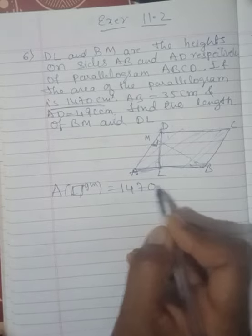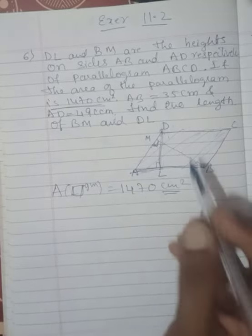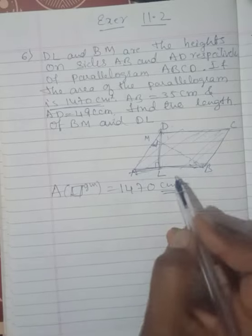Area of parallelogram is 1470 cm squared, very simple. What is given? AB is equal to 35 centimeters.